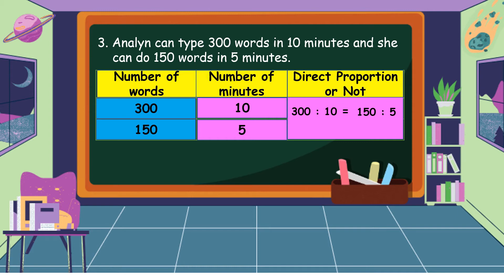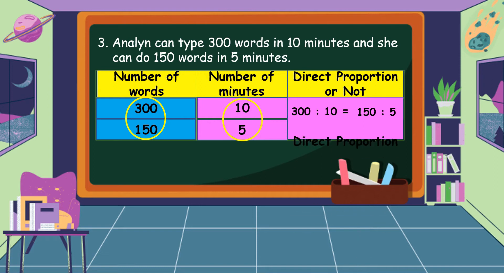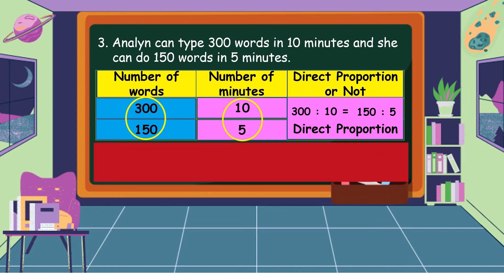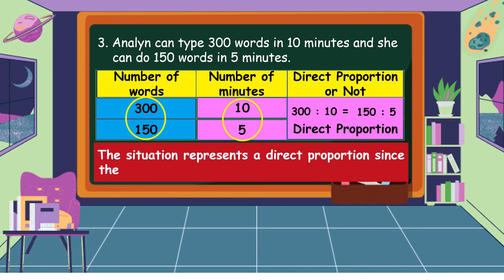Kindly observe the number of words and the number of minutes: 300 down to 150, and 10 down to 5. As the number of words decreases, the number of minutes also decreases. So this means that it shows a direct proportion. The situation represents a direct proportion since the first and second quantities decrease proportionally.